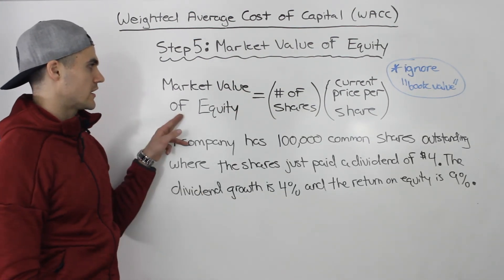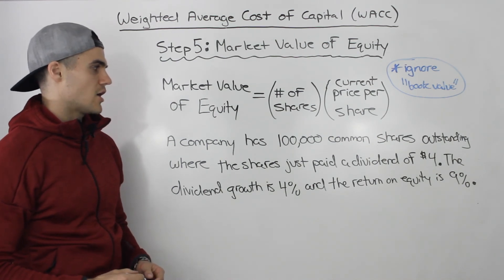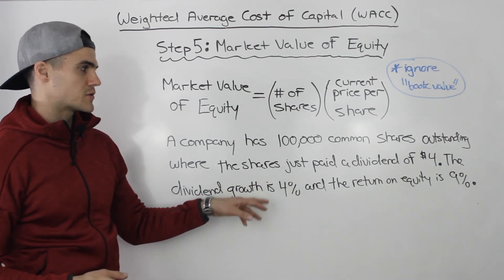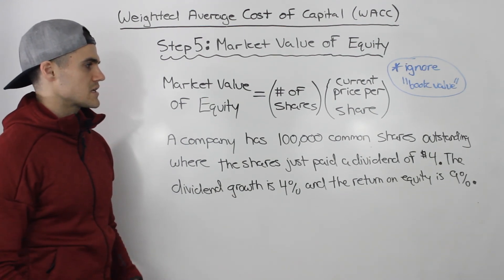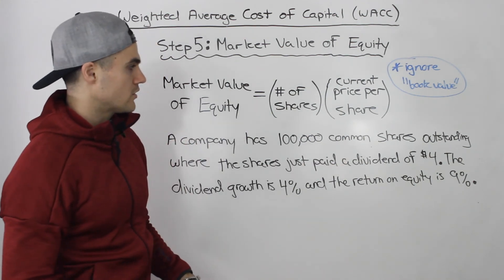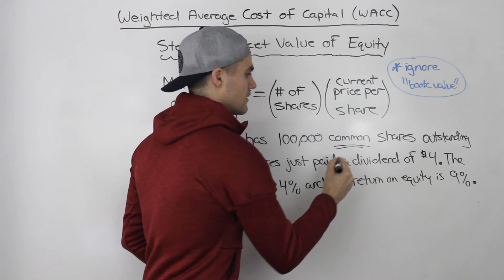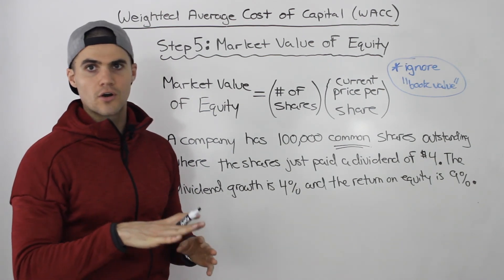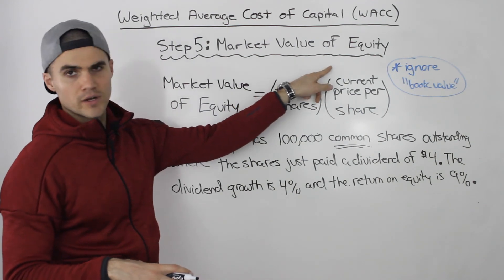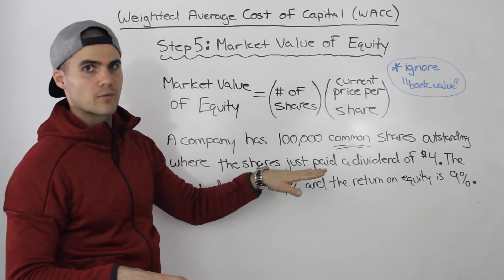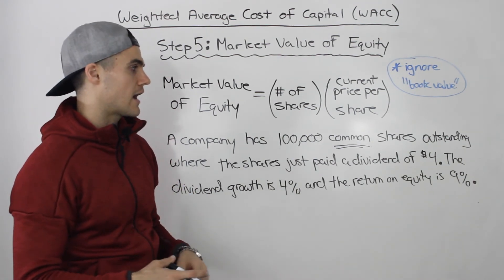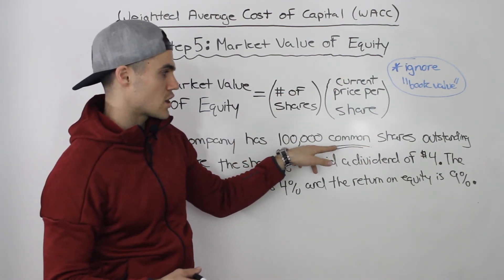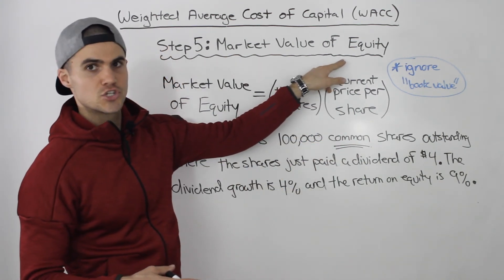Let's look at a scenario for calculating the market value of equity. We have a company that has 100,000 common shares outstanding, where the shares just paid a dividend of $4. The dividend growth is 4% and the return on equity is 9%. Whenever you are given common shares, you are dealing with the general equity class — as opposed to preferred shares, which are a separate source of capital and fall into the preferred equity class.